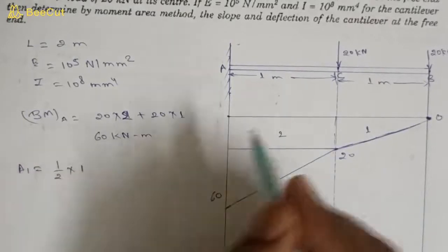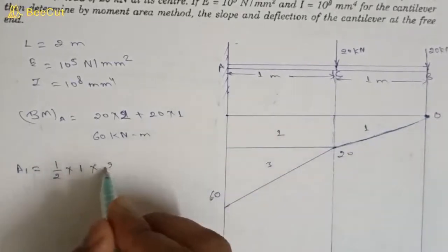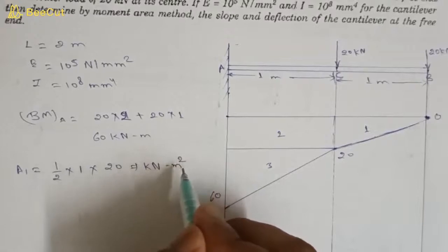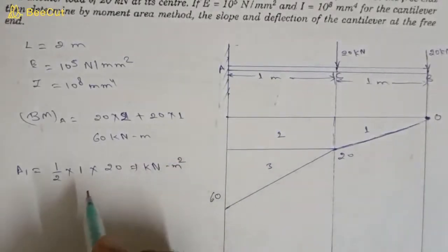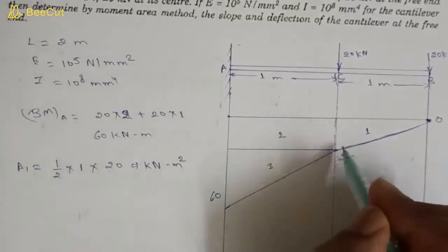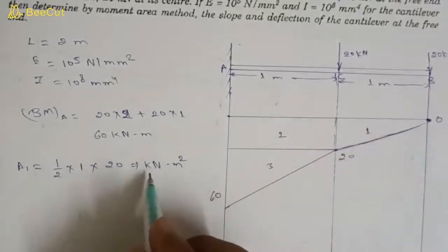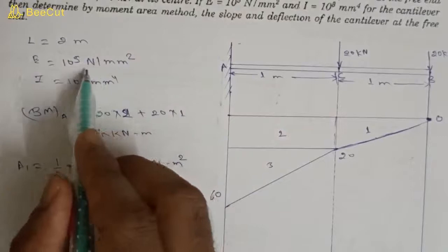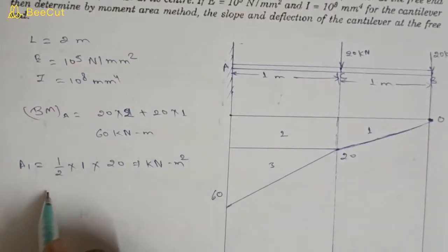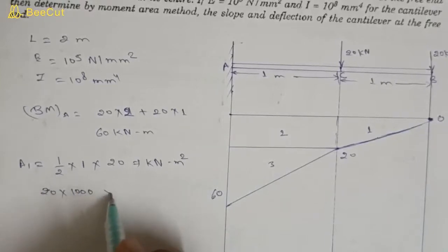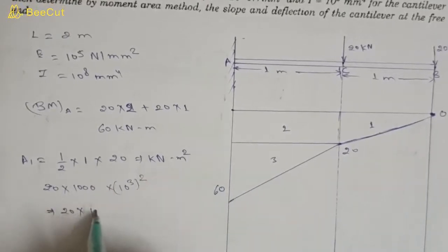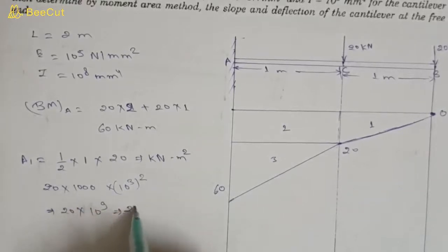Area A1 is triangular, so A1 equals half into base into height: half into 1 meter into 20 kilo Newton meter, giving 10 kilo Newton meter square. Converting to Newton mm square: 20 into 10 to the power 3, and meter square into mm square multiplies by 10 to the power 6, so A1 becomes 1 into 10 to the power 10 Newton mm square.